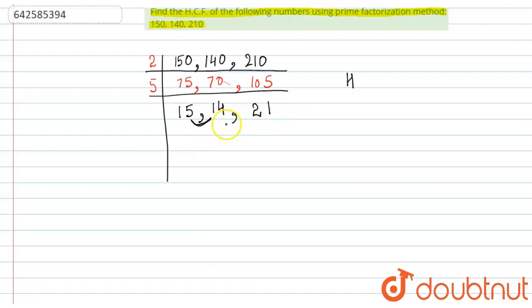So the HCF of these numbers is 2 × 5, which equals 10.